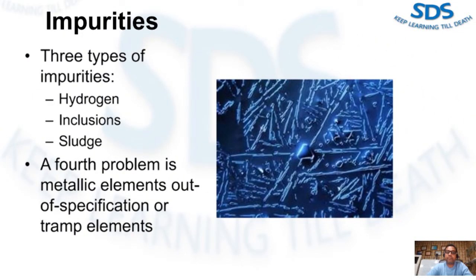There are principally three types of impurities that may exist in molten aluminum die cast alloy: first is hydrogen, second is inclusions, and third is sludge. A fourth problem that can be encountered is a metallic element out of specification, or trap elements. If your material is out of specification, return it to your metal supplier.